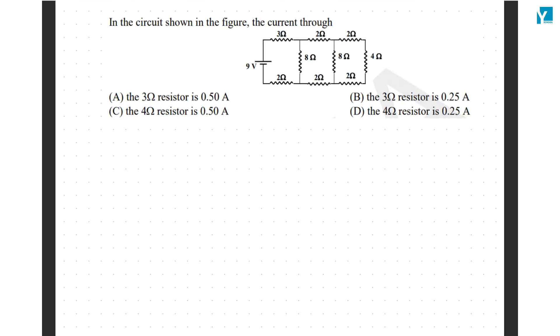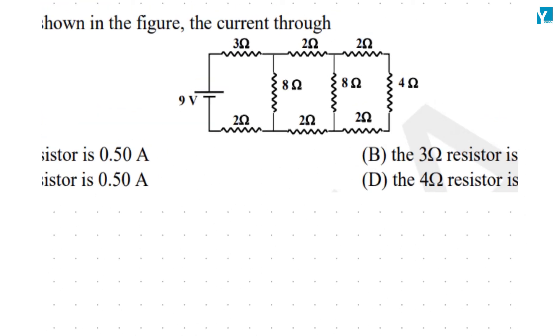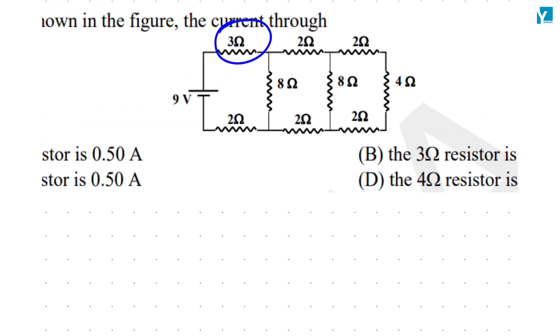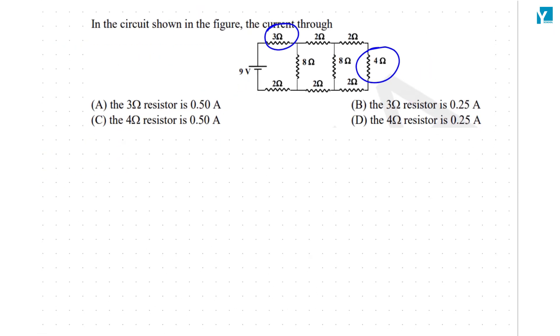In the circuit shown in the figure, the current through 3 ohm resistor, 4 ohm, 3 ohm, 4 ohm. Let's solve for 3 ohm and 4 ohm. So a 3 ohm resistor is here and the 4 ohm resistor is here.